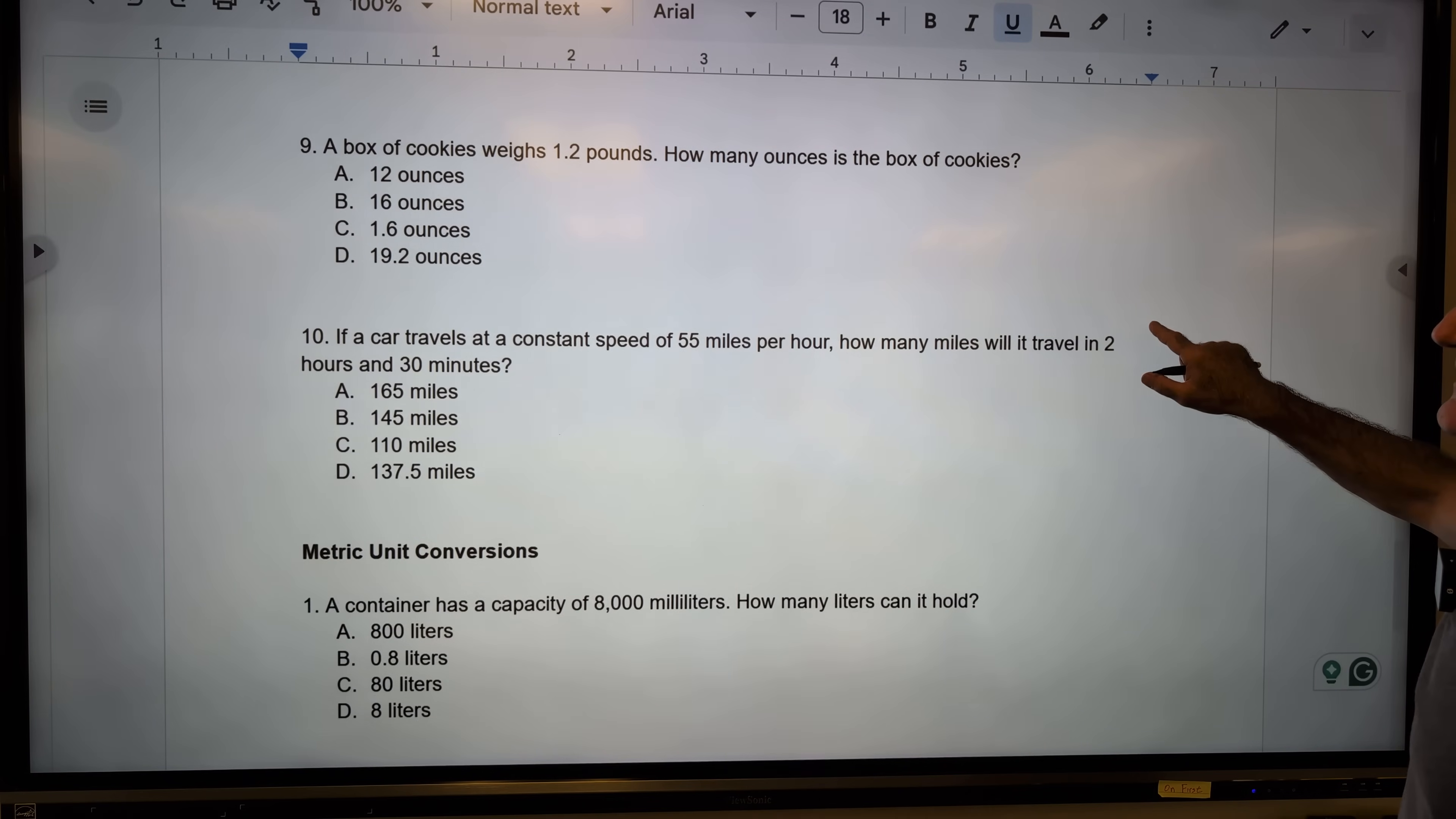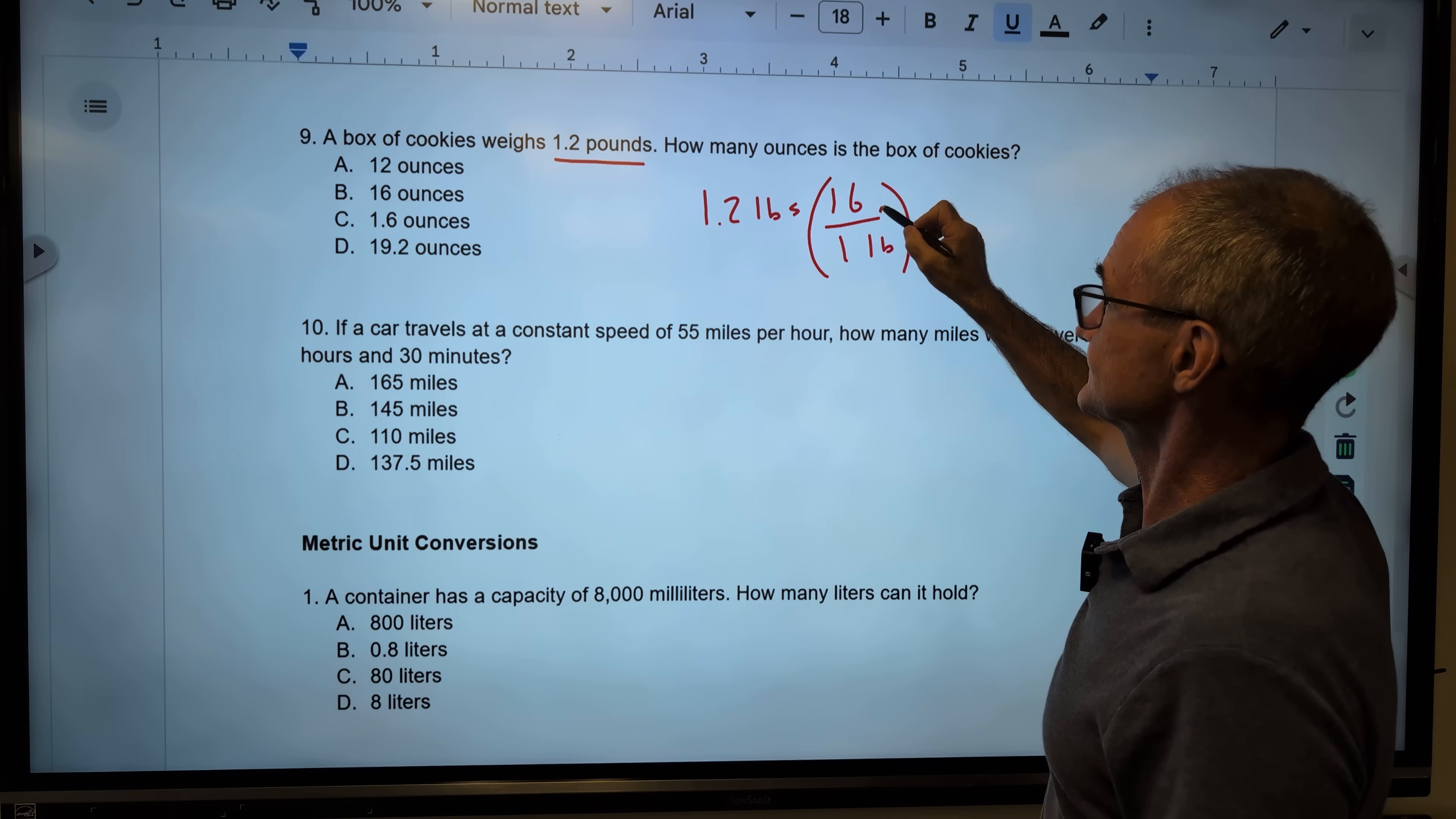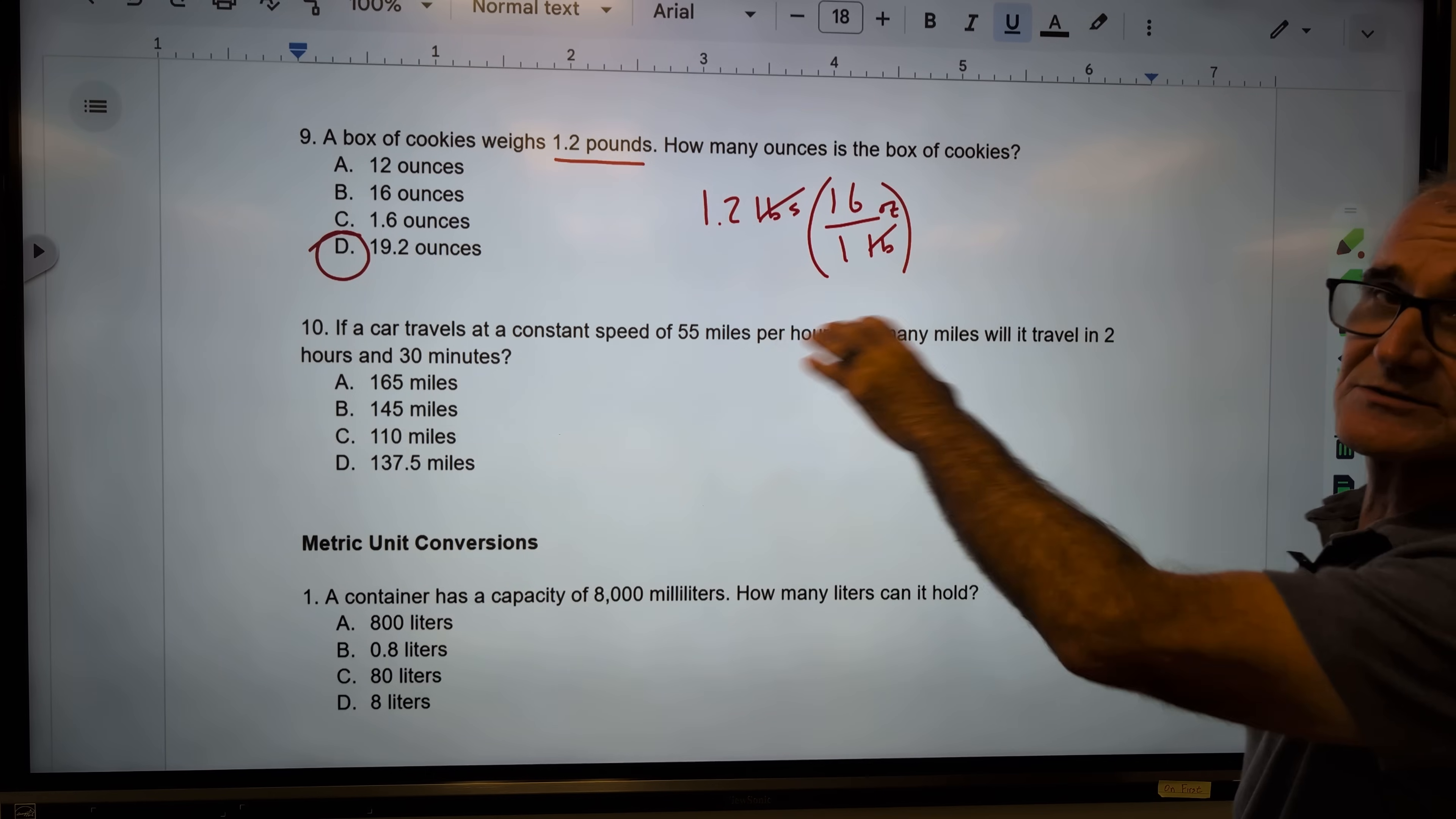Okay, last couple of problems. Maybe in the future I'll do some metric conversion problems. But for this video, we'll end it here. A box of cookies weighs 1.2 pounds. How many ounces is in the box? So I have 1.2 pounds multiplied by 16 ounces to the pound. So my pounds cancel. So I have to do 1.2 times 16. And actually I can look up there. 1.2 is more than one. So the answer has to be more than 16. There's only one answer here, more than 16. So it has to be answer D. I can multiply it out, but I could also use my answers as part of my solution.